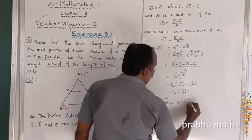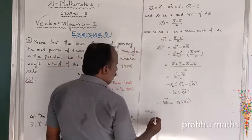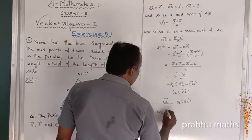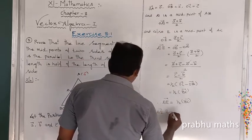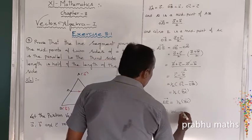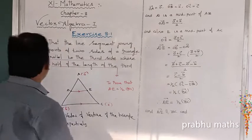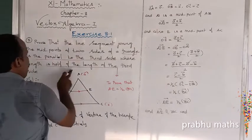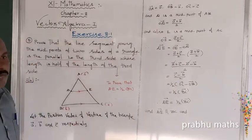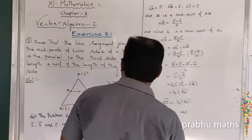Therefore, DE vector equals one-half times BC vector. This means DE is parallel to BC, and whose length is half of the length of the third side BC. That is the answer — DE equals one-half into BC vector. Clear.